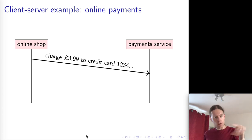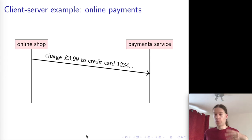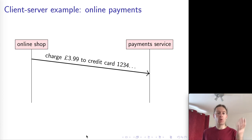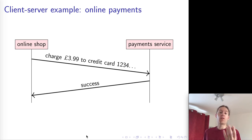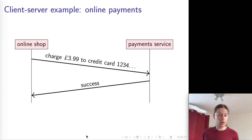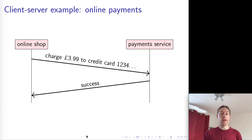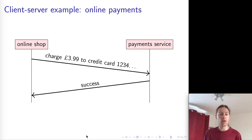If it's successful, they go through all of this in reverse, and maybe do extra checks like making you enter a password or sending you a text message. Eventually, hopefully, the payment service sends a message back to the online shop indicating whether the payment was successful or not. This is a very concrete example of a distributed system that is really used like this every single day.